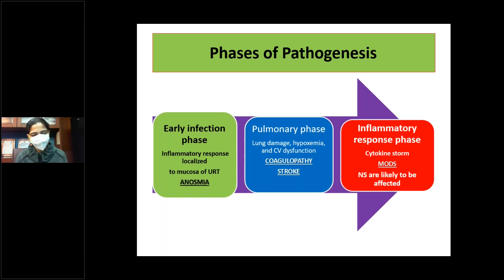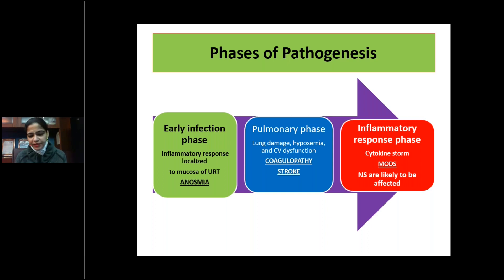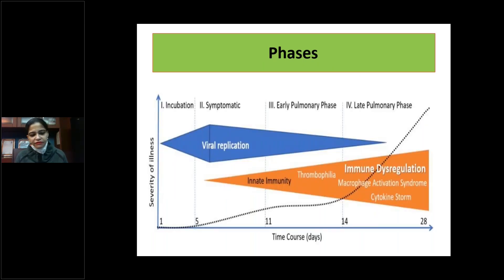In early phases, an inflammatory response localized to the respiratory tract mucosa can cause anosmia and altered taste. The pulmonary phase may involve the nervous system through coagulopathy. The third phase — the hyperinflammatory response — involves cytokine storm with multiple organ involvement including the nervous system. Neurological involvement can begin from the incubation period when nasal mucosa is affected, and continue through the late pulmonary phase when immune dysregulation occurs.